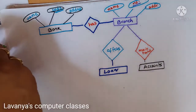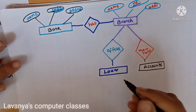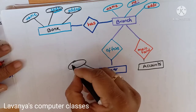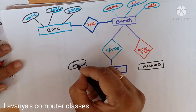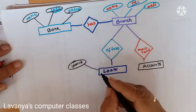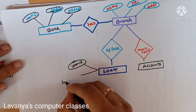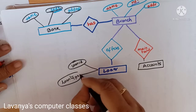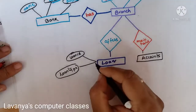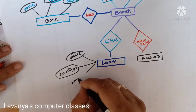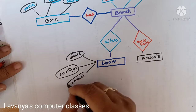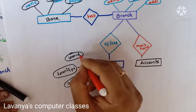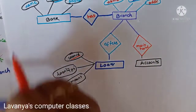Loan and account are both entity sets. The attributes of loans are: loan ID, loan type, and amount. Loan ID is the primary key, so it is underlined.